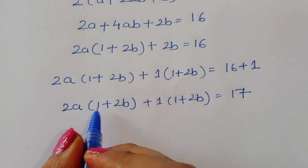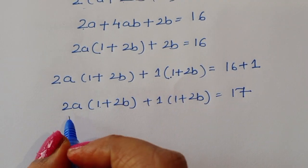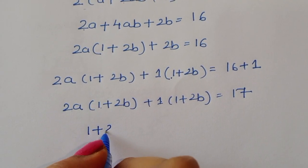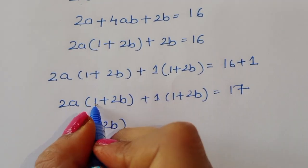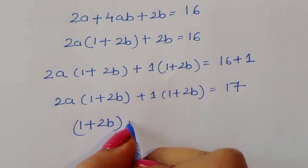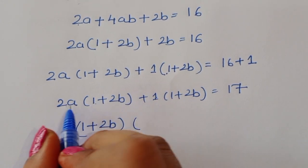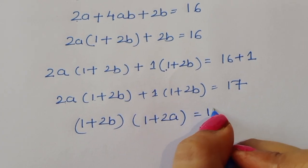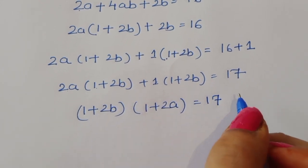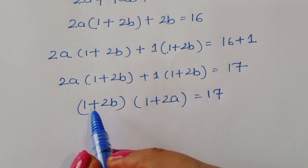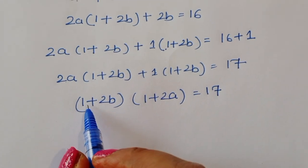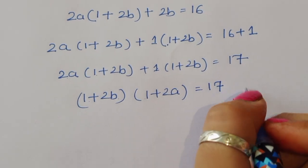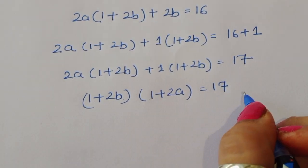Now we can take (1 plus 2b) as common. So we get (1 plus 2b) times (1 plus 2a) is equal to 17. We now have the product of two expressions equal to 17.